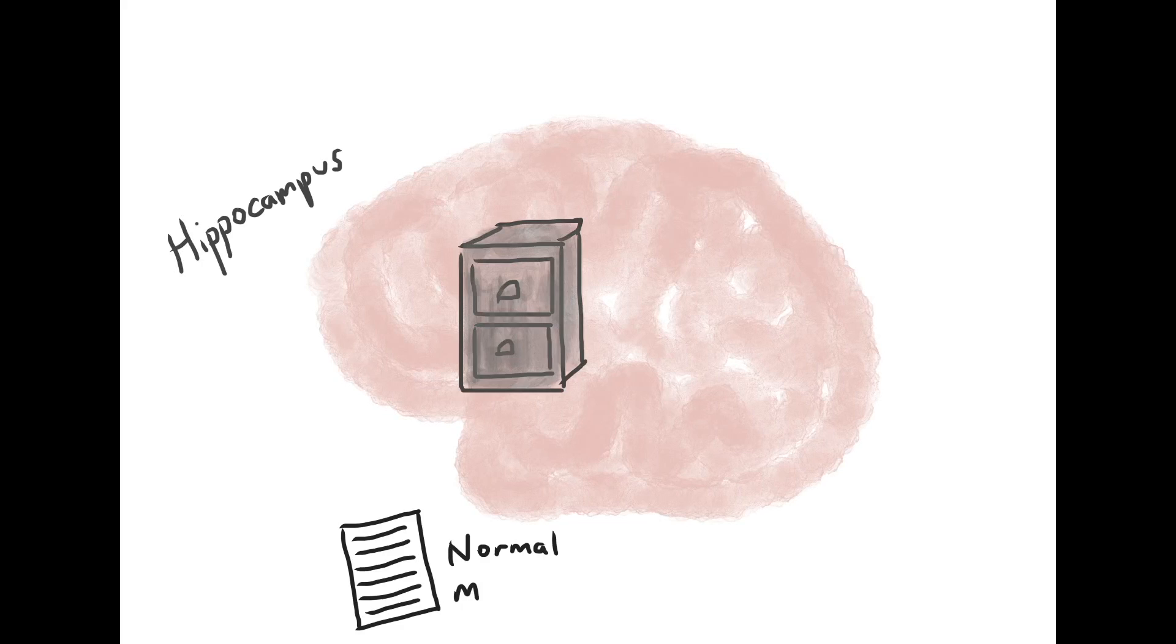Now, normal memories have a number of different characteristics. These memories are generally organized, categorized, and sequential. They are verbally accessible, and you have control over the retrieval of these memories.